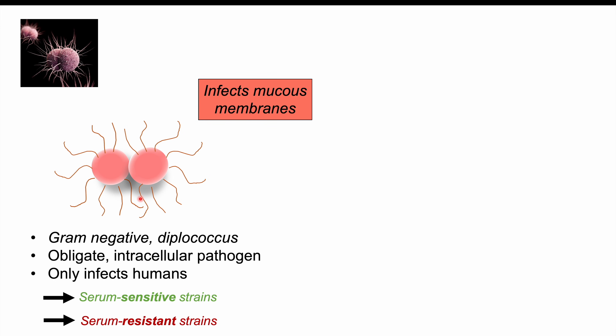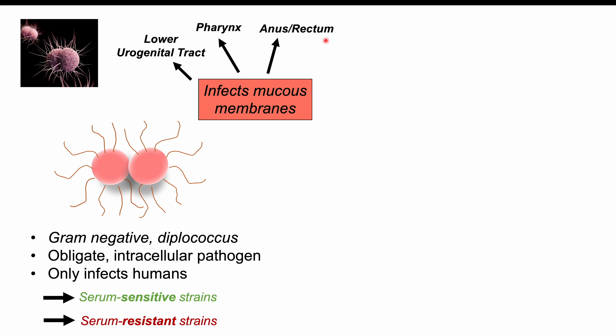When an individual is exposed to Neisseria gonorrhea, if the organisms come into contact with mucous membranes, infection can occur. The mucous membranes that can be invaded include the lower urogenital tract — the most commonly affected — as well as the pharynx, the anus and rectum, and the conjunctiva of the eyes.